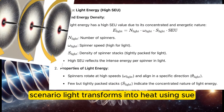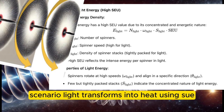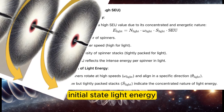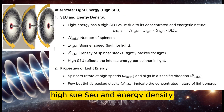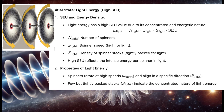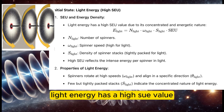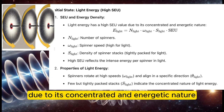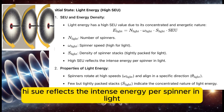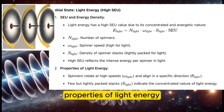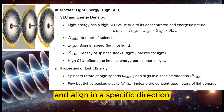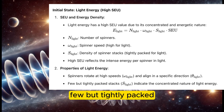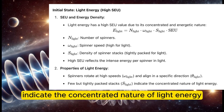Scenario: light transforms into heat using SU. Initial state — light energy: high SU, SEU, and energy density. Light energy has a high SU value due to its concentrated and energetic nature. High SU reflects the intense energy per spinner in light. Properties of light energy: spinners rotate at high speeds and align in a specific direction, with few but tightly packed stacks indicating the concentrated nature of light energy.